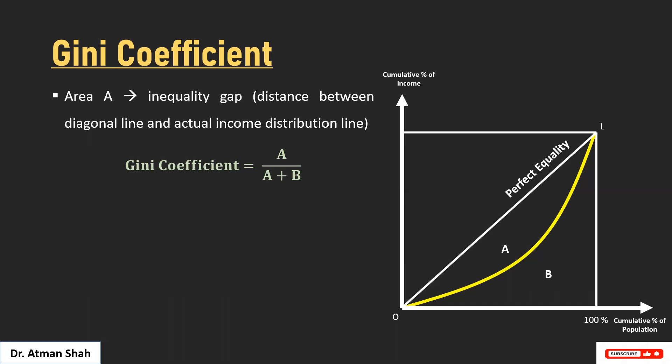The Gini coefficient is equal to A divided by (A + B). Now if A is equal to zero, that means the Gini coefficient is equal to zero. That shows perfect equality — meaning your actual income distribution does not deviate from the diagonal line.